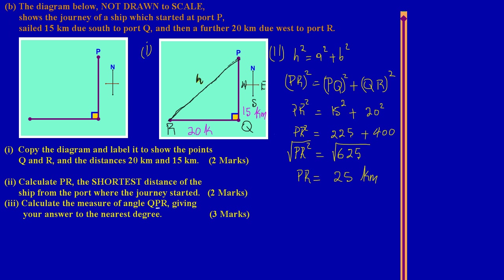I'll mark the angle at point P and call it theta. Positioning myself at angle theta, I have a right angle triangle, so I can use the trigonometric ratios to solve for the missing angle.